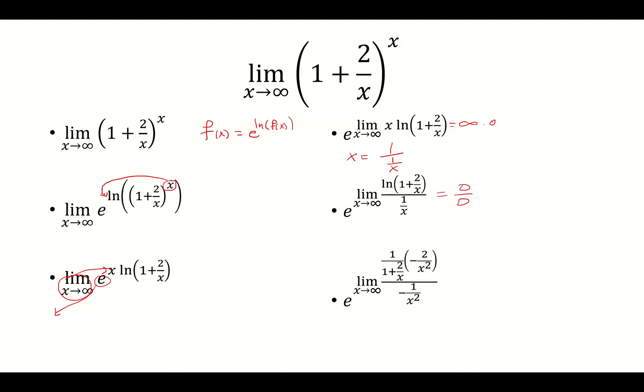You take the derivative of natural log of 1 plus 2 over x as 1 over 1 plus 2 over x times negative 2 over x squared. And the derivative of 1 over x is negative 1 over x squared.